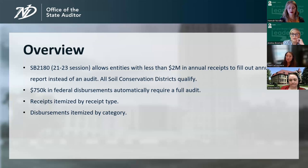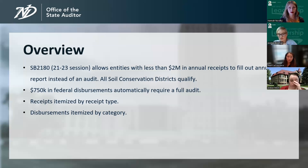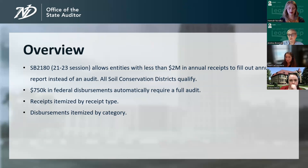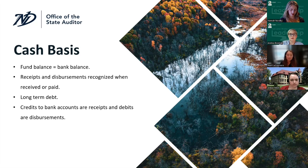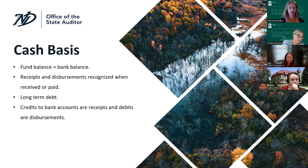If you receive grant funding or federal government funding, that would go in the intergovernmental section. The disbursements on the annual financial report form are itemized by activity. If it's payroll or governing board, that would go into the general government section. For soil conservation districts, most of the expenses will be related to soil conservation, so most expenses go into the category of conservation of natural resources. This form is filled out on a cash basis, which means that the fund balance needs to equal the bank balance. There are no accounts receivable or accounts payable to include, which simplifies things considerably. Receipts and disbursements are recognized when they are received or paid out — when it comes out of the bank account, or goes in, that is when it's recorded.